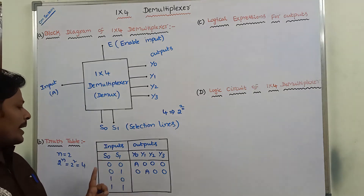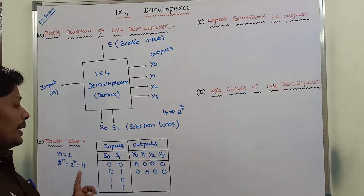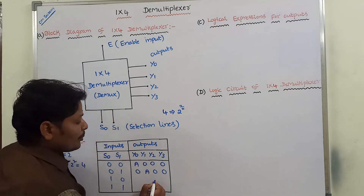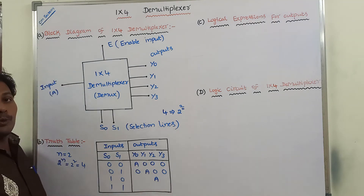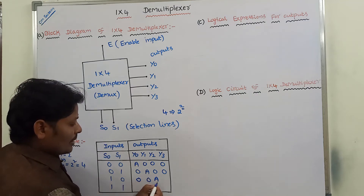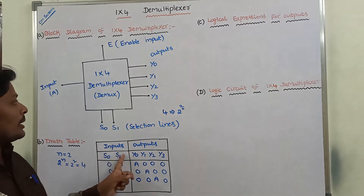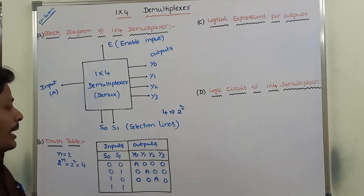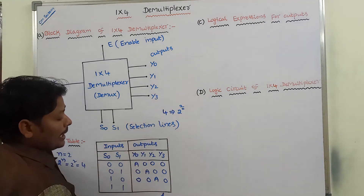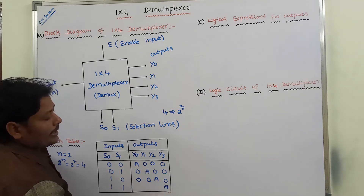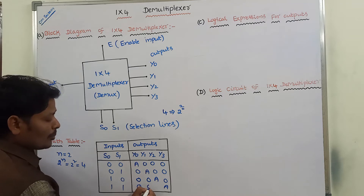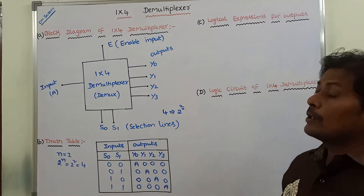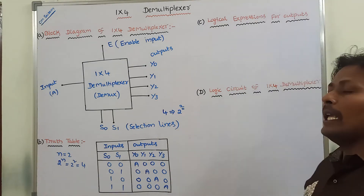When S0, S1 values are 1, 0, the equivalent decimal value is 2, therefore Y2 output is selected and input line A is connected to Y2 output line. The remaining outputs are 0s. When S0, S1 values are 1, 1, the equivalent decimal value is 3, therefore Y3 output is selected and input line A is connected to Y3 output line. The remaining outputs are 0s. In this way we construct the truth table of 1x4 demultiplexer.